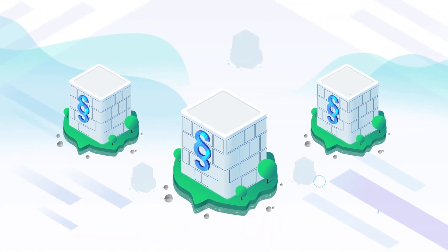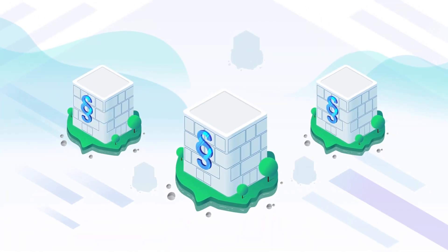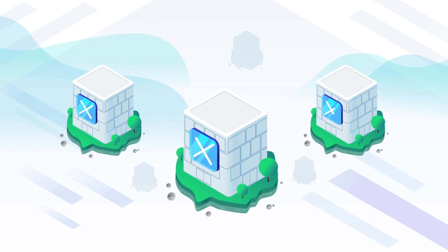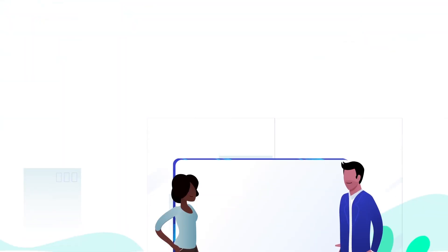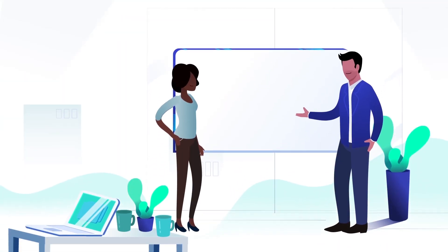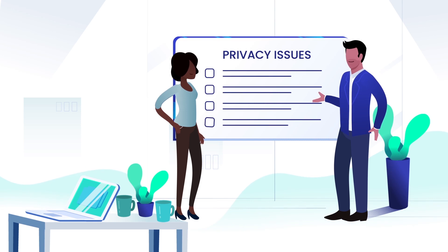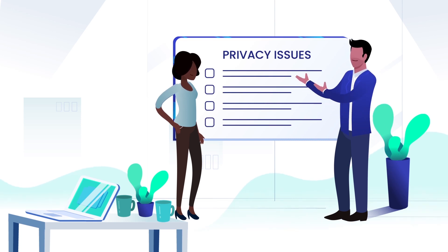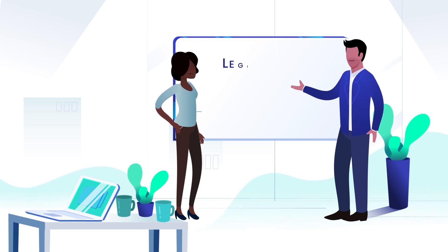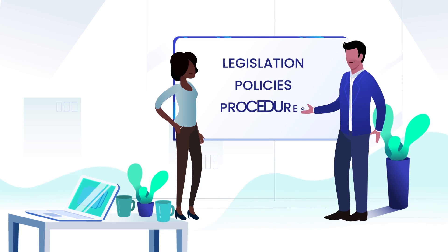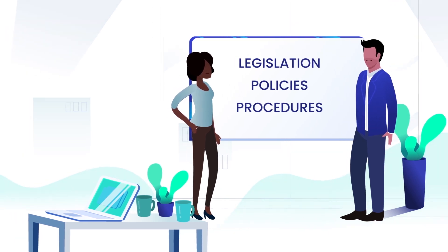Some agencies will also have other legislative obligations governing what they can and cannot do with personal information, such as secrecy provisions. Your privacy officer is the primary point of contact for advice on privacy issues and will be able to tell you about any agency-specific legislation, policies and procedures that relate to privacy.